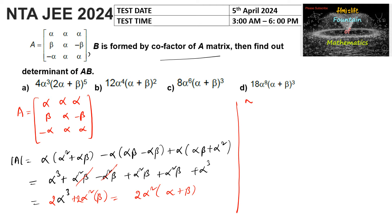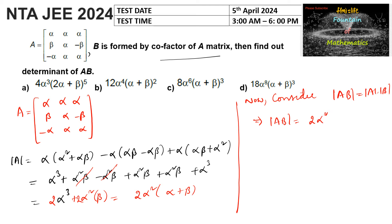Now consider the determinant of AB, which is equal to determinant of A times determinant of B. So determinant of A is 2·alpha squared times (alpha plus beta).